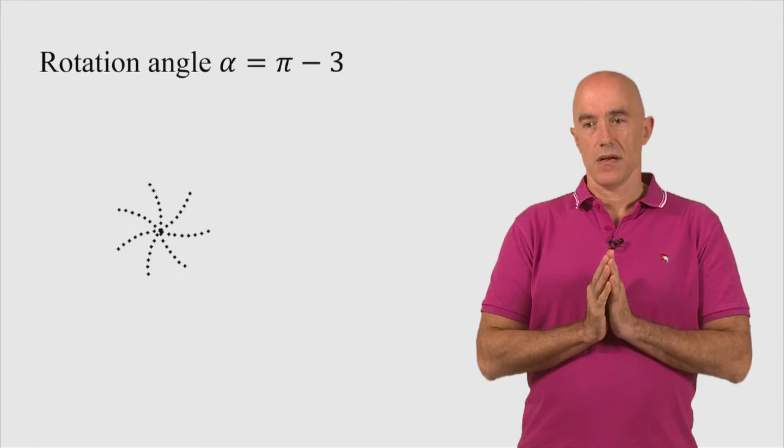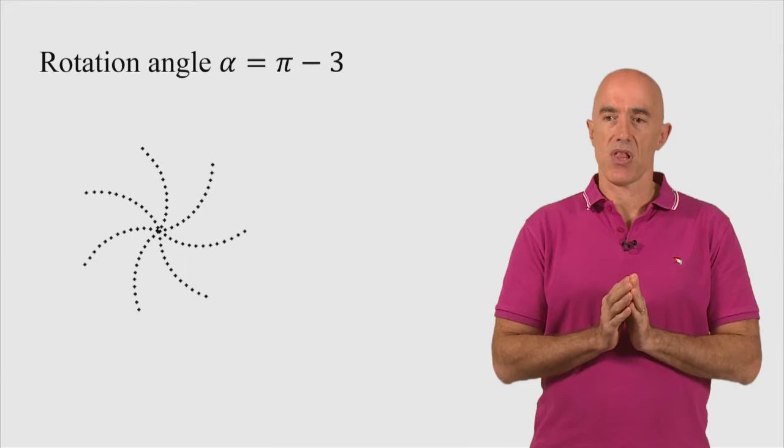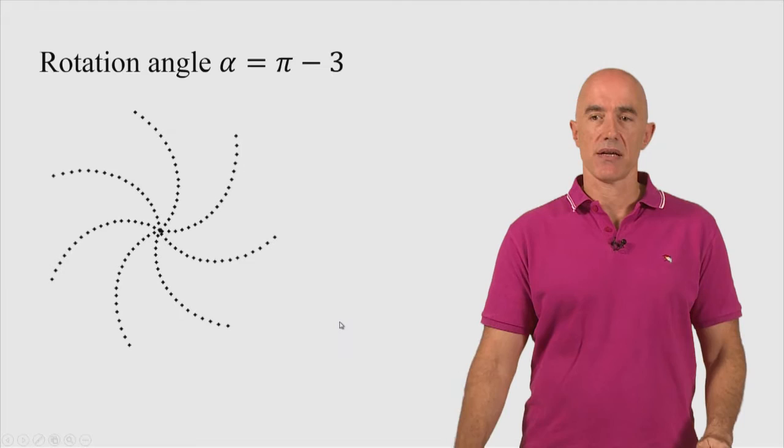Well, once again, we're getting seven curves now instead of seven lines. They're kind of like spirally like, right? Spirally like. But certainly not our sunflower head.